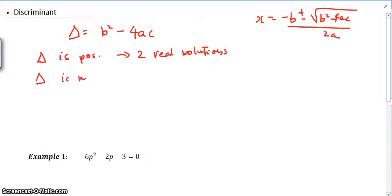And the next case is, if delta is negative, so if the discriminant is negative, we will get no real solutions, which means that on the actual Cartesian plane, you will have no x-intercepts that you can actually find there.